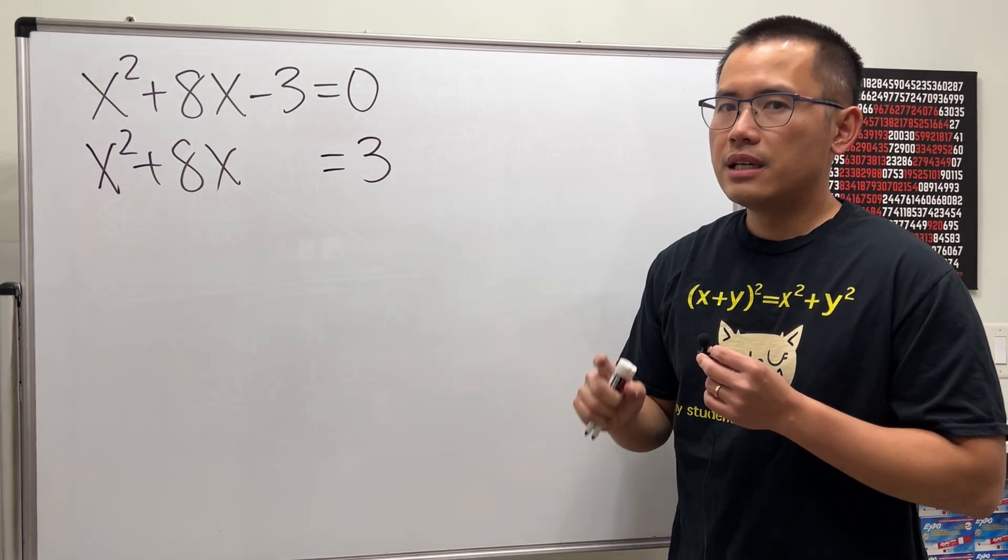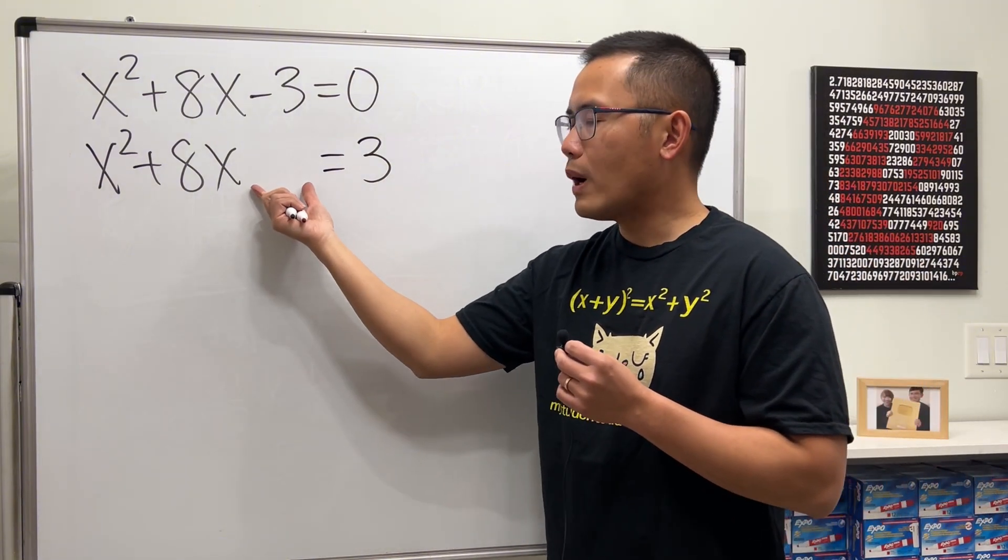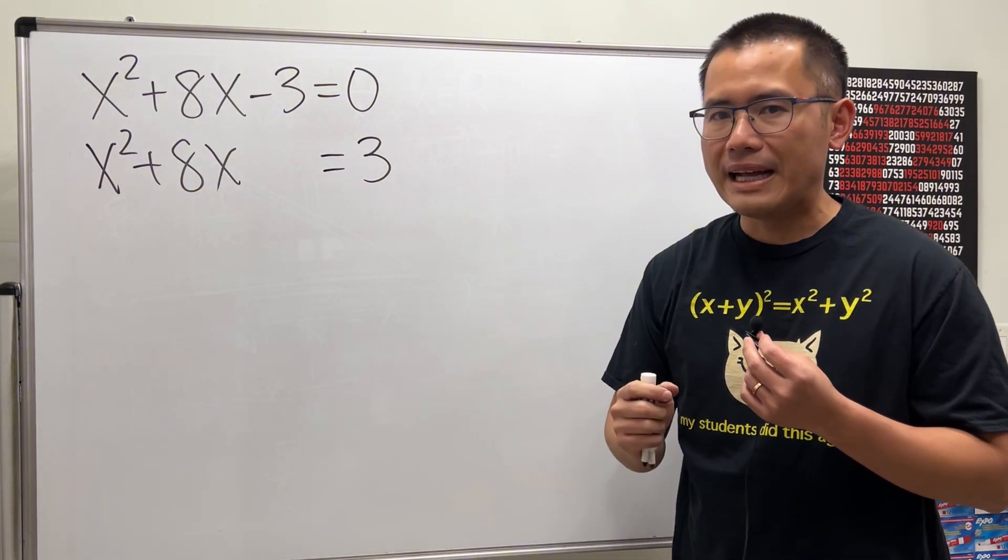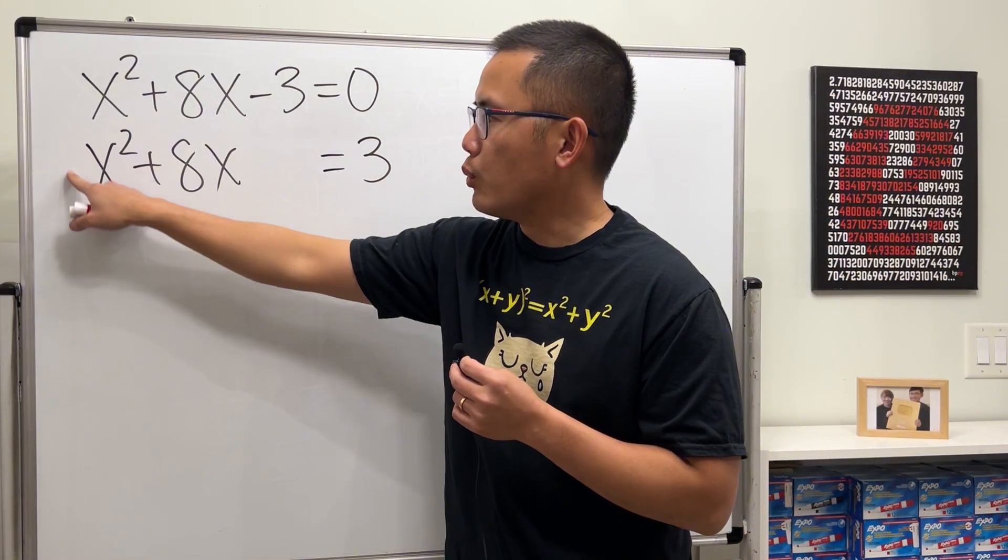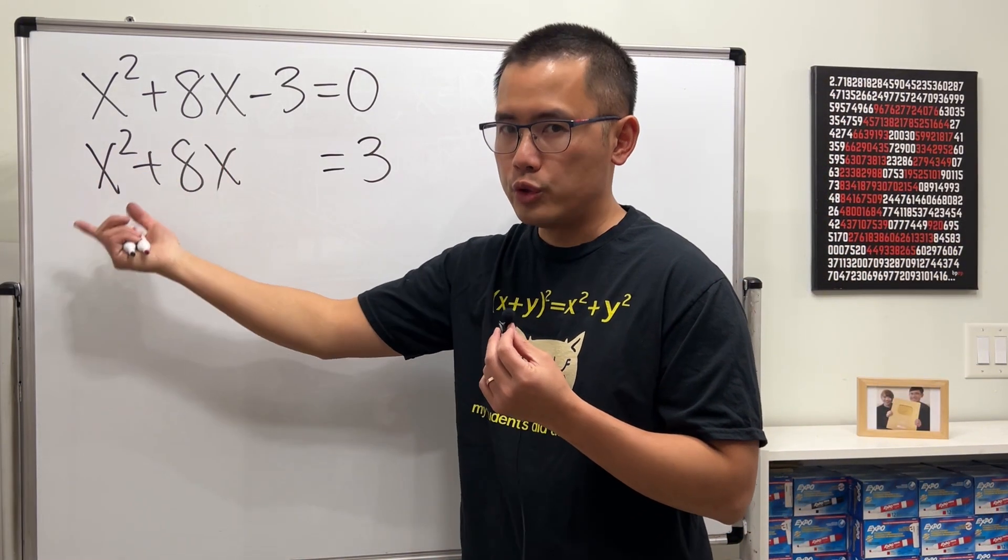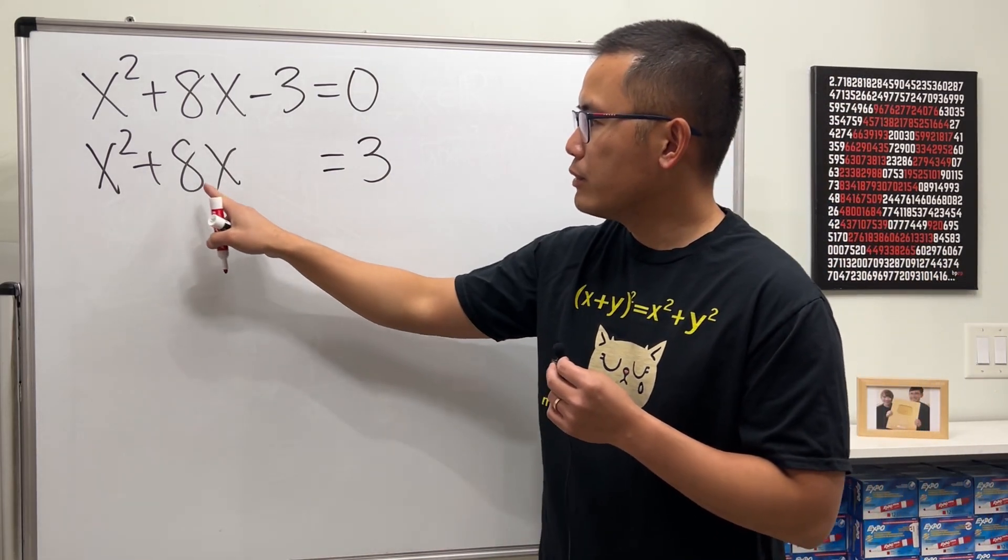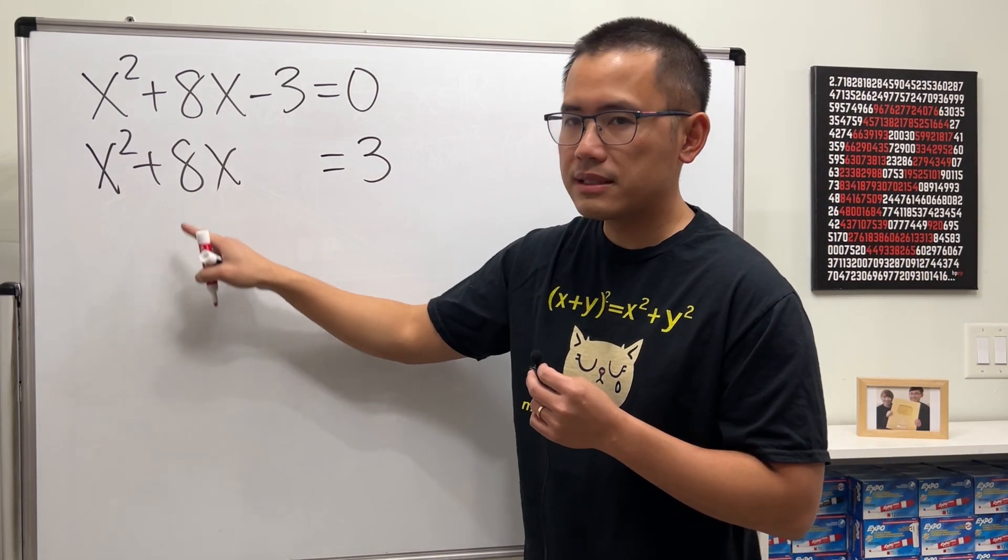Next we have to figure out one number to add right here, and I call the number the magic number. To do so, first we have to make sure that we have a 1 in front of the x², which we do, then we can proceed. We will have to look at this value, which is positive 8.